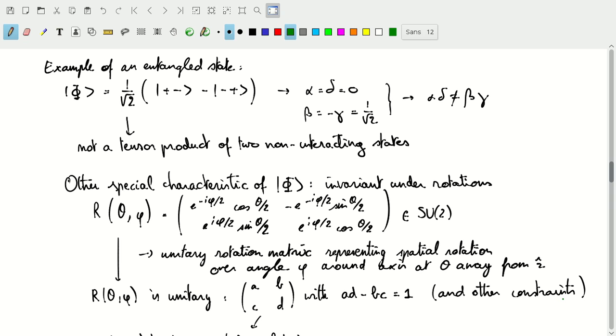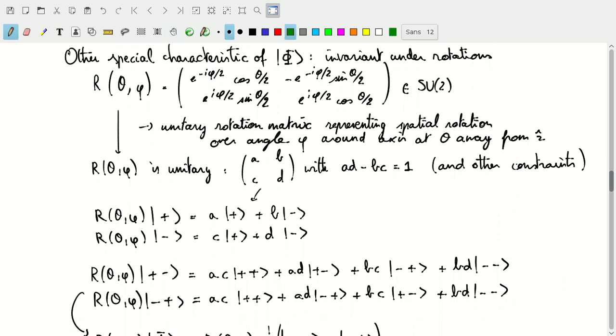There's other constraints that I'm not writing down here. So that means if we rotate our vectors in our two-dimensional Hilbert spaces that we're taking the tensor product of, then we'll find a times the |+> state plus b times the |-> state. And for the |-> state, we'll find c times the |+> state plus d times the |-> state after rotation.